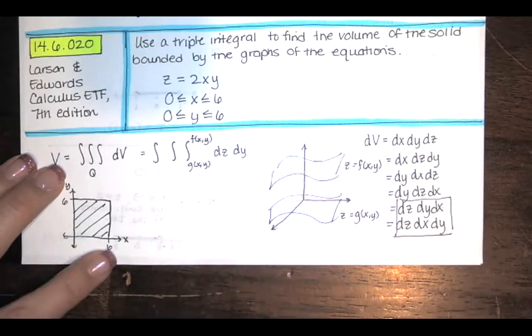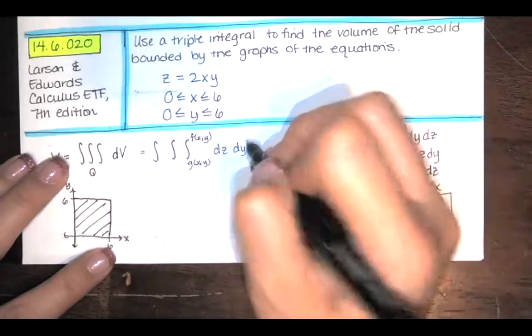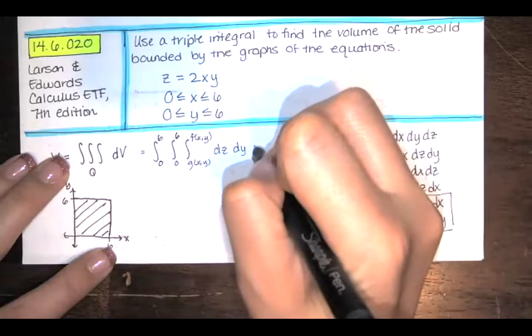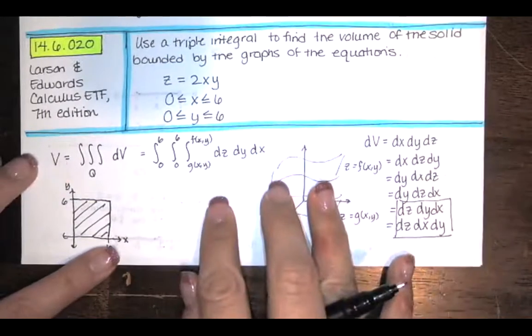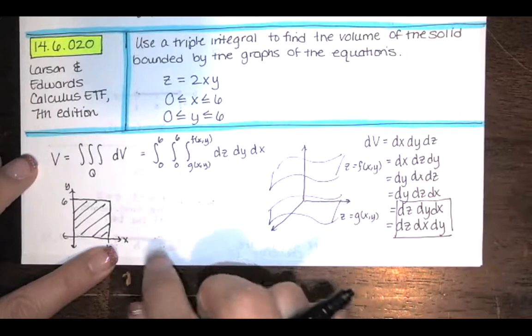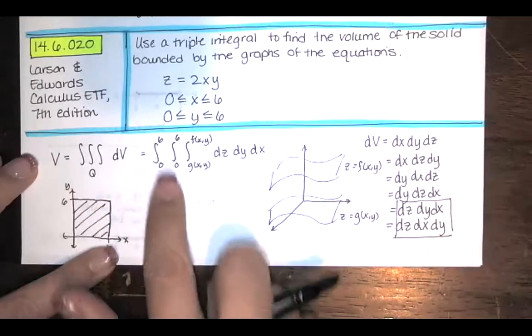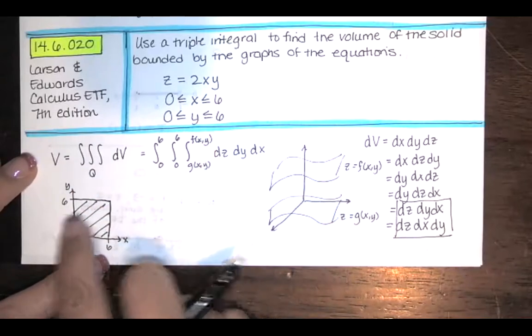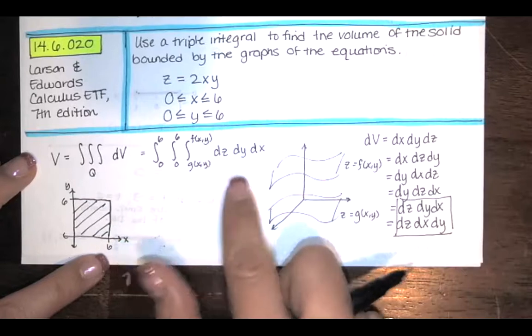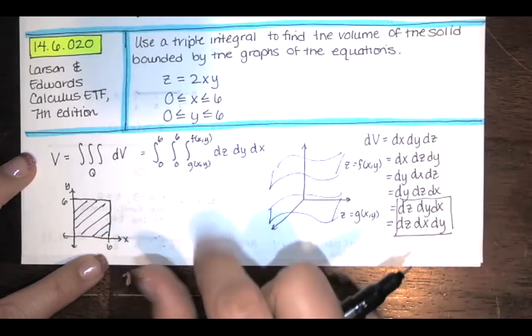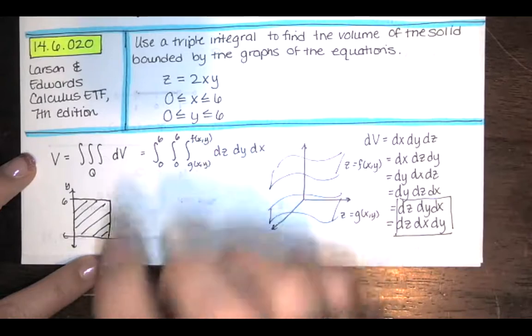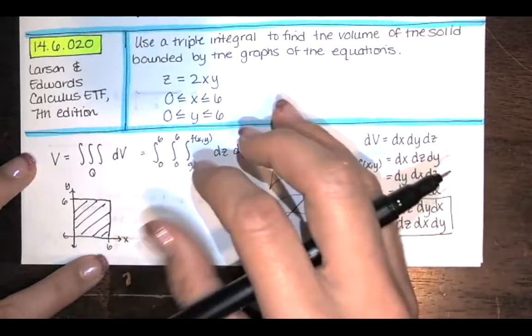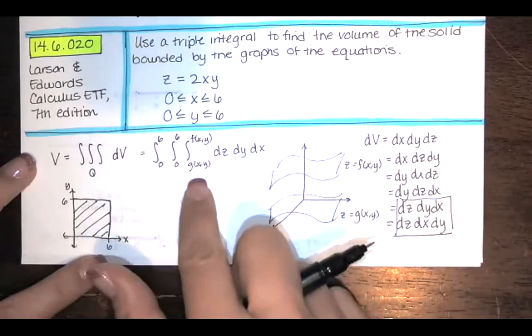Now in this case, they tell us that x is between 0 and 6, and y is between 0 and 6. So we're just looking at a square of side length 6. So it really doesn't matter if we integrate with respect to y first and then x, or x first and then y. Either way, x and y are going from constants to constants. So this is the generic setup for something that looks like this over this region R, which happens to be this square of side length 6. But for us, it would be helpful if we knew where z started and where z stopped.